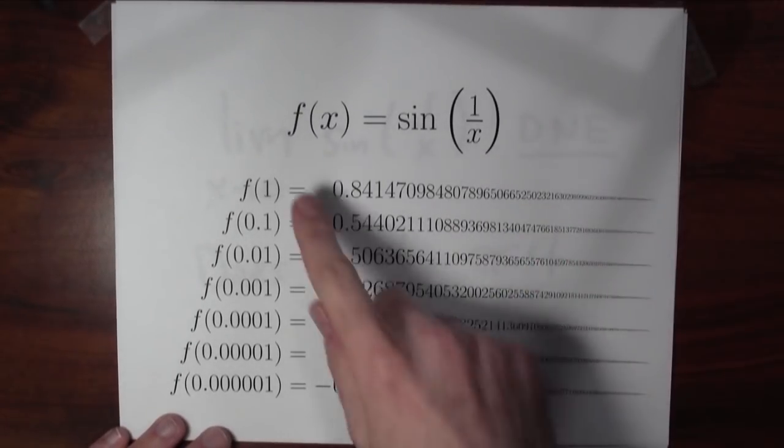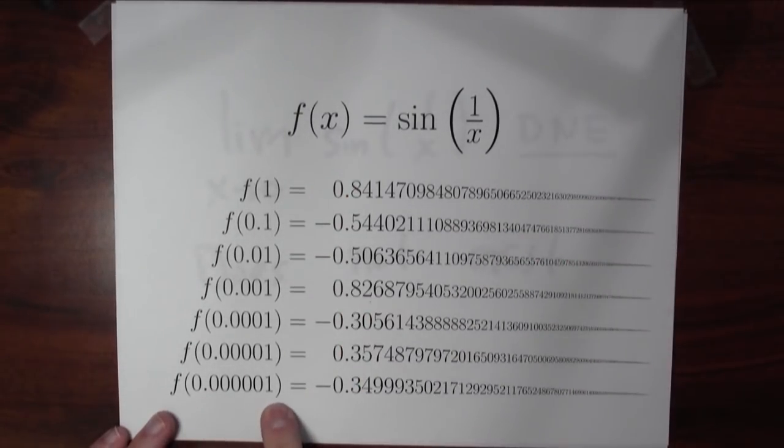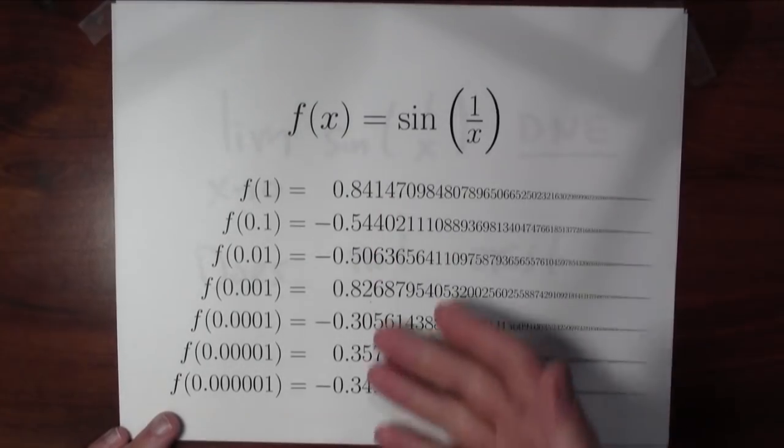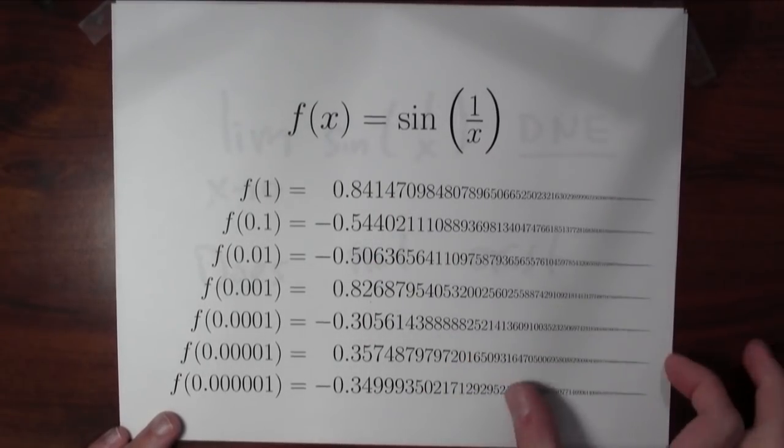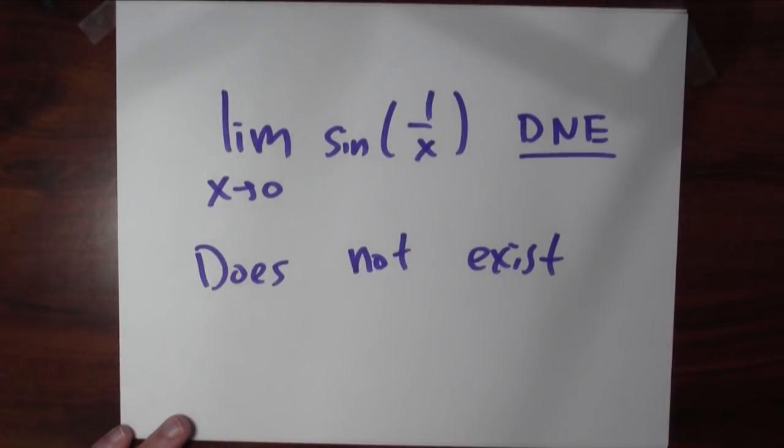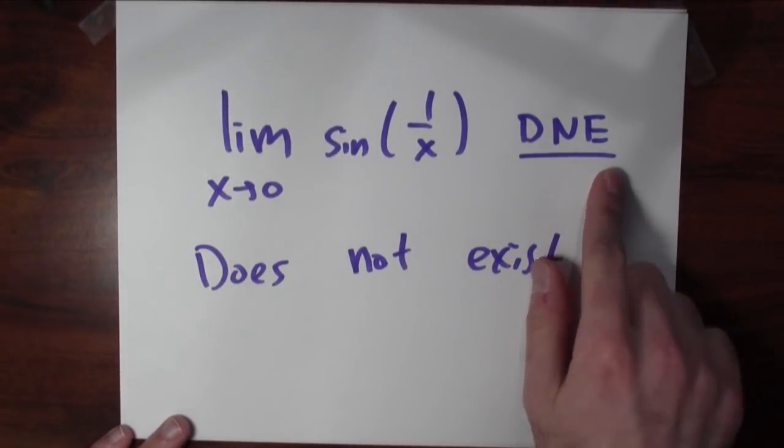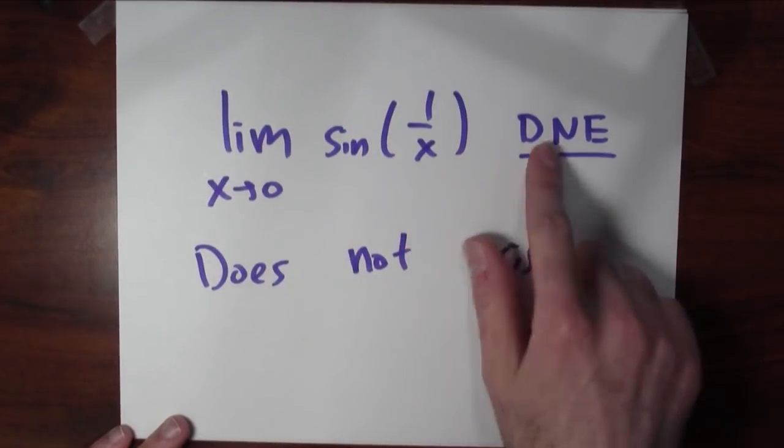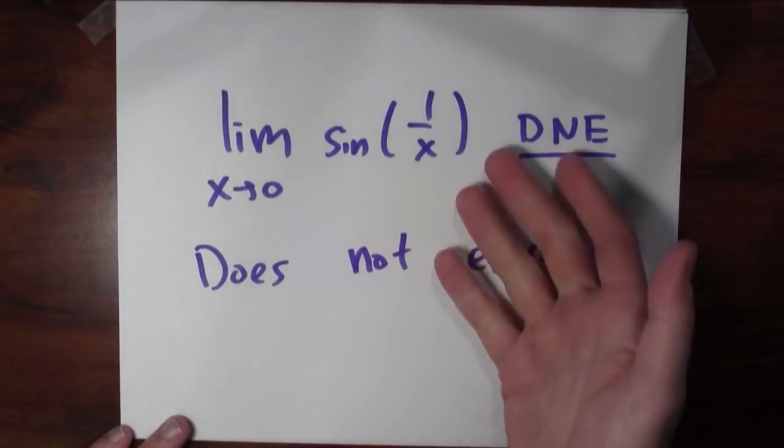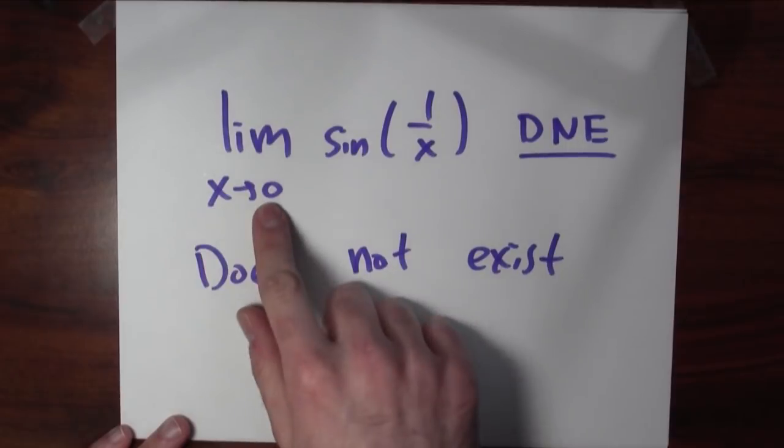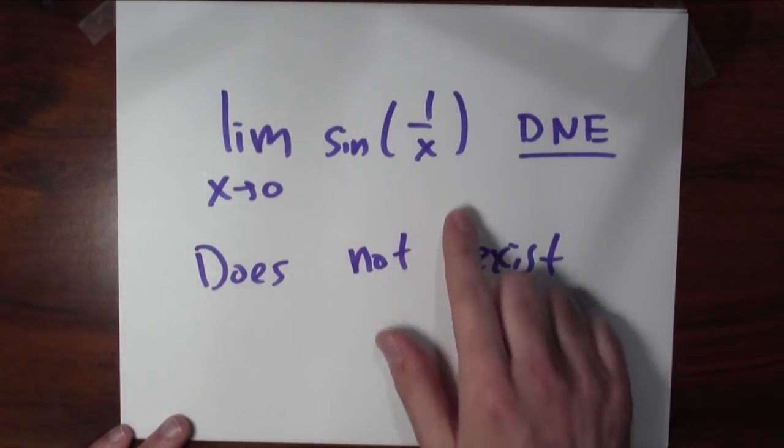If you tell me that this limit is some positive number, well look, when I evaluate the function at a number very close to zero, the output's negative. So the limit's probably not some positive number. But there's also inputs very close to zero that give positive output. So the limit's probably not a negative number either. Limit's probably not zero either because none of these numbers are getting close to zero.